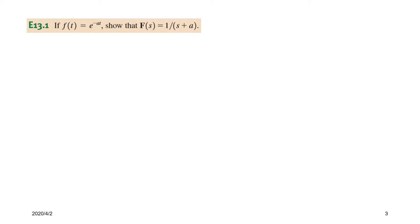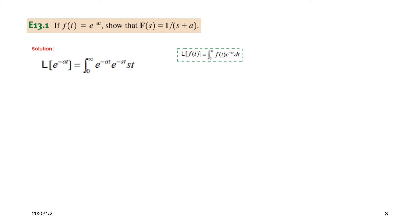Now let us solve the first problem. In part 1, if F(t) is e raised to the power minus at, show that F(s) is 1 over s plus a. We will follow the definition, so for F(t) we write e^(at). The Laplace of e raised to the power minus at will be the integral of e^(at) times e^(st), and since they have the same base we add the exponents to get e raised to the power minus (s plus a).